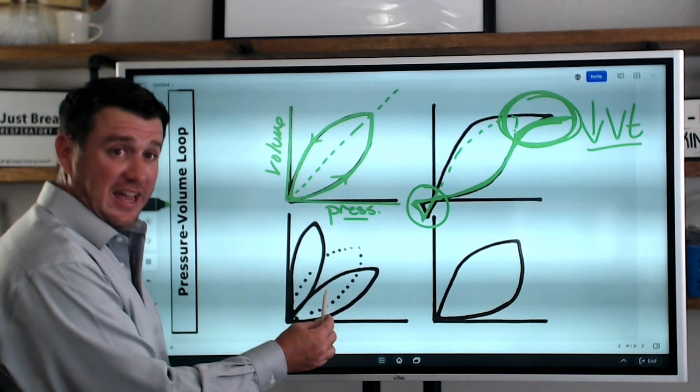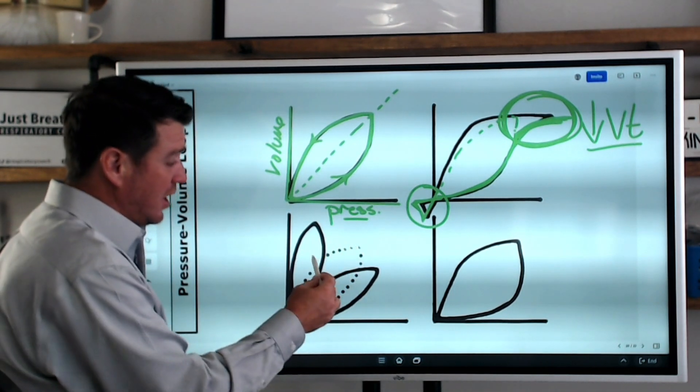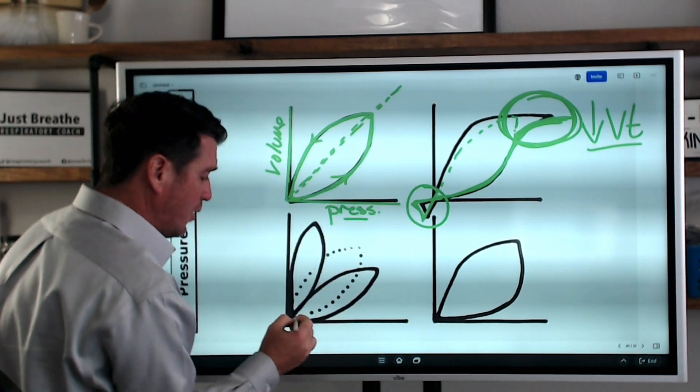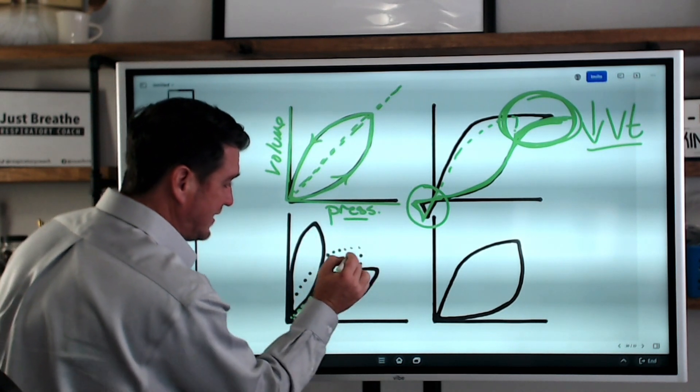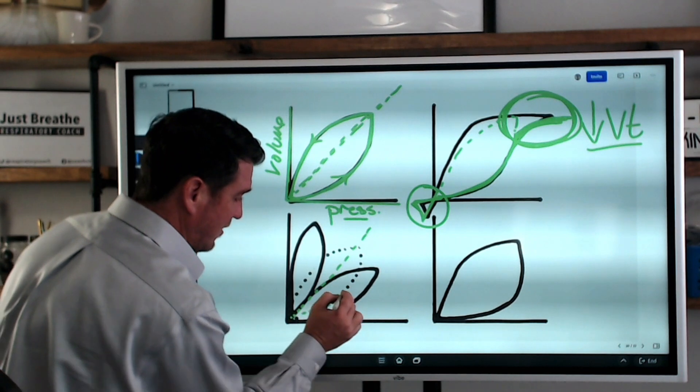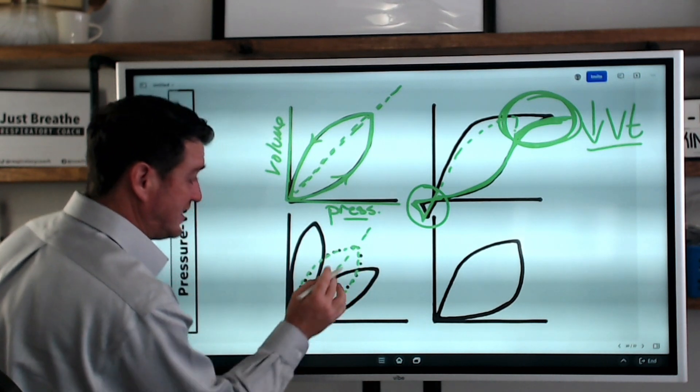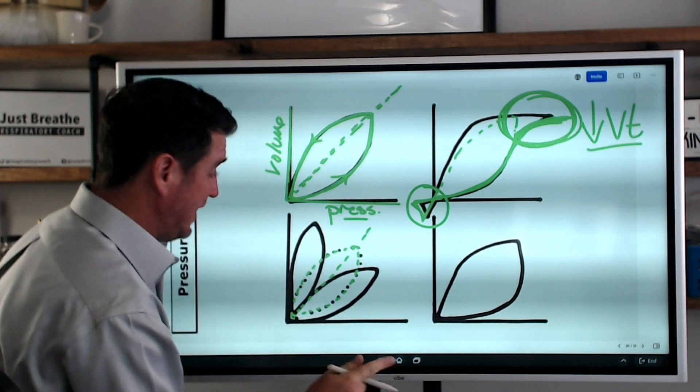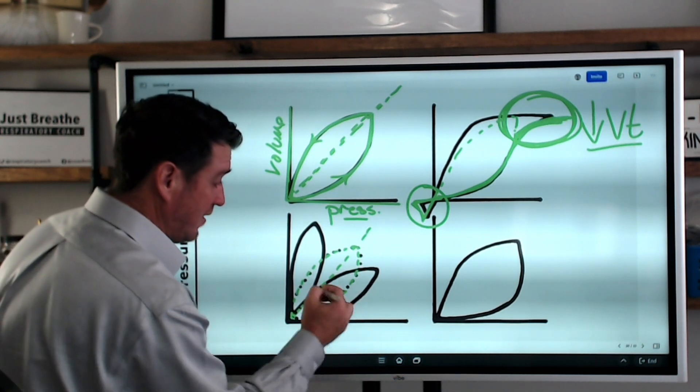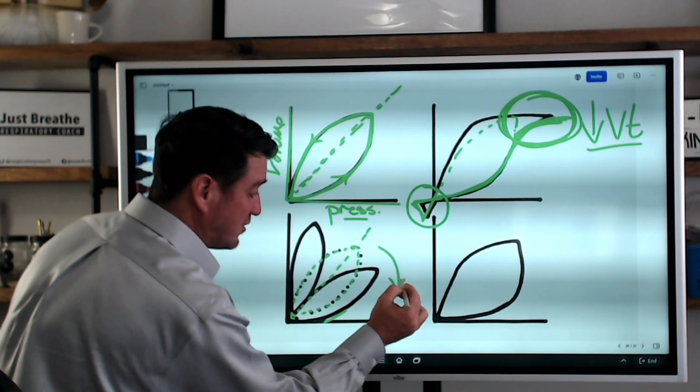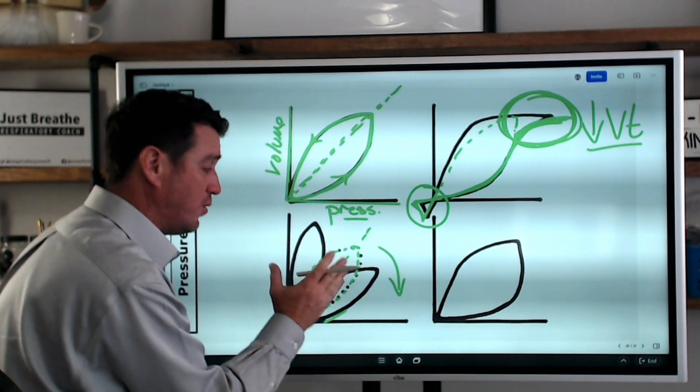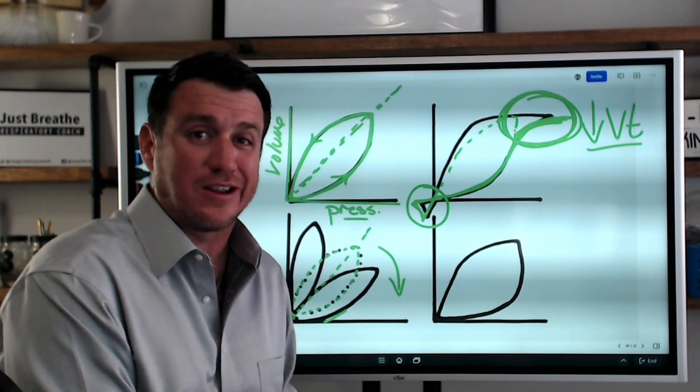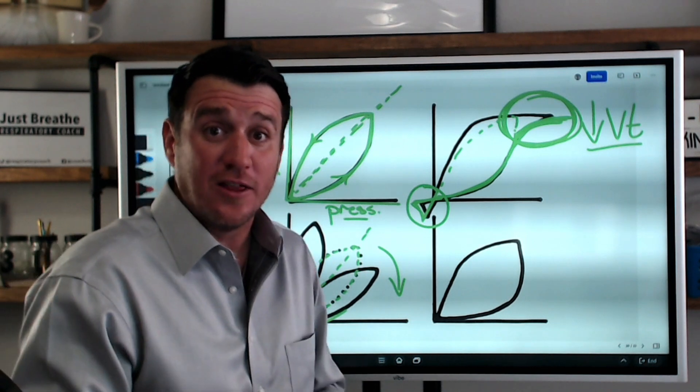Now, when we come down here to this angle of the loop, to this one right here, we notice, remember I told you that this is supposed to be at a 45 degree angle? Well, that's what we see here. We see that this image here gives us that 45 degree reference. But what we see is that this loop here is laying further down. It's more horizontal than 45 degrees. And this tells us that we have a decrease in our compliance.